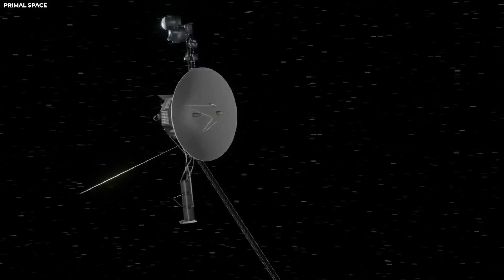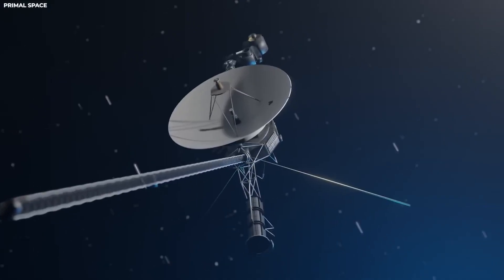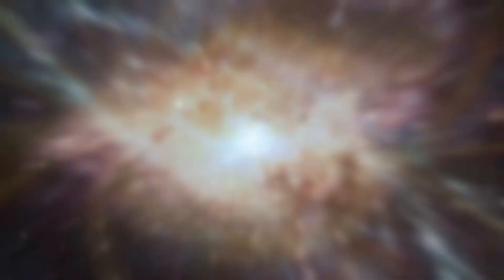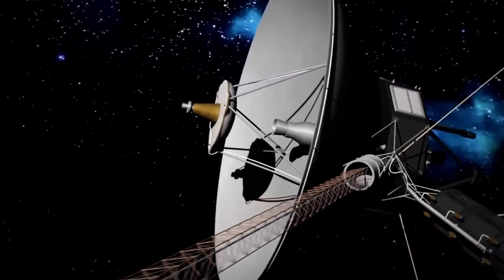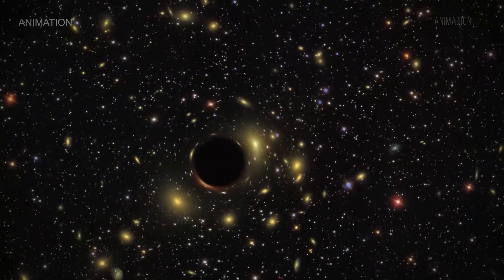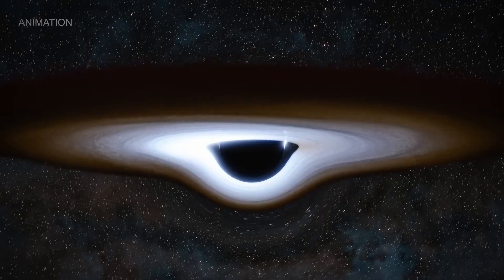Voyager has passed through at least two interstellar clouds, regions of denser gas and plasma that ripple like invisible fog banks. And in each one, it recorded different conditions, different temperatures and different magnetic alignments, like crossing continents with invisible borders.